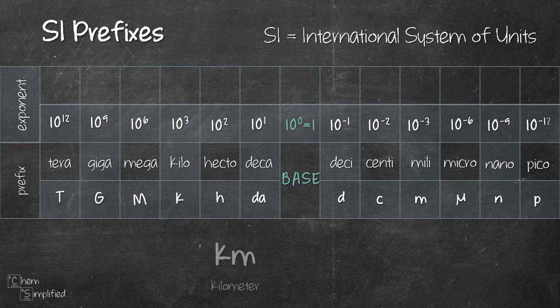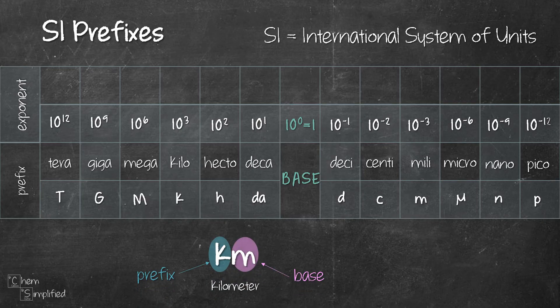Let me explain how a prefix is used with a base unit. Let's take km — kilometer — for example. K in this case represents the prefix kilo. M in this case is short for meter, so meter is the base unit. That means 1 kilometer is equal to 10 to the power of 3 meters.